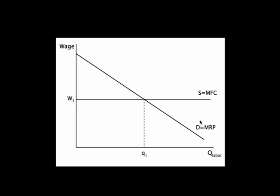The demand for labor is the marginal revenue product. In the case of being perfectly competitive in the output market, we use value marginal product — price times marginal product. Otherwise, we use the general form of marginal revenue times marginal product. If you are a monopoly in the output market, you use marginal revenue product instead of price times marginal product, and marginal revenue is always less than price, so that value would be lower.